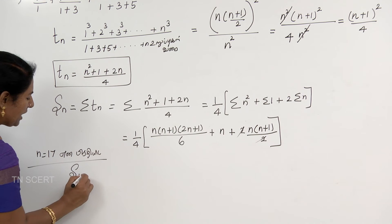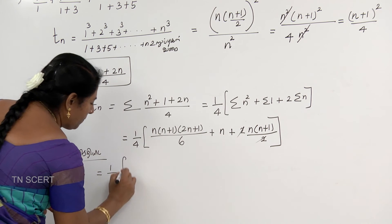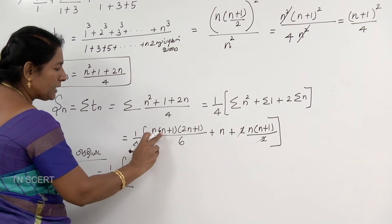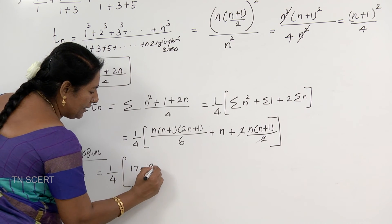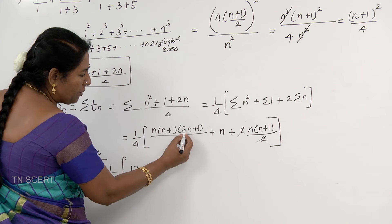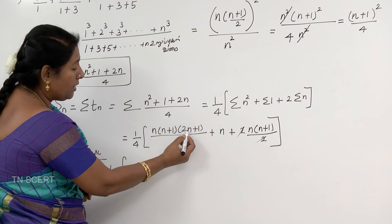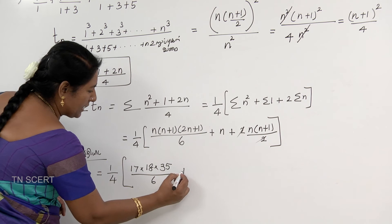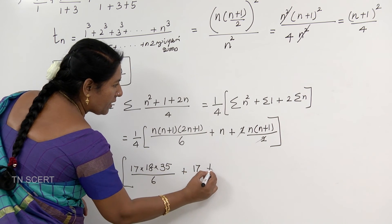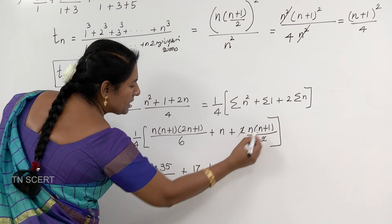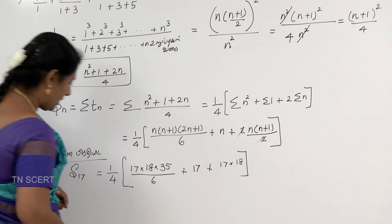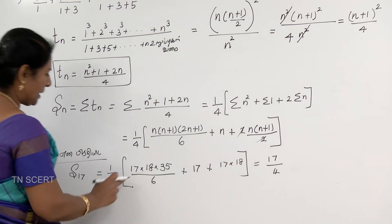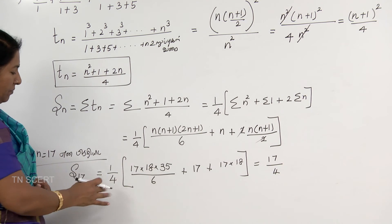Therefore, S17 is equal to... As it moves, 2n plus 1 becomes 2 times 17 plus 1 equals 35, by 6 plus this is n equals 17, n plus 1 is 18, so if you know it's 18, then 16 by 4, it's 18.